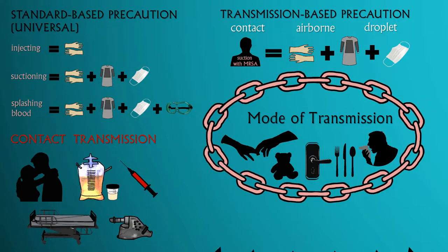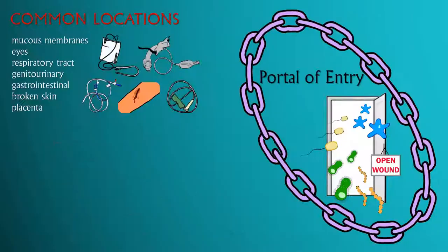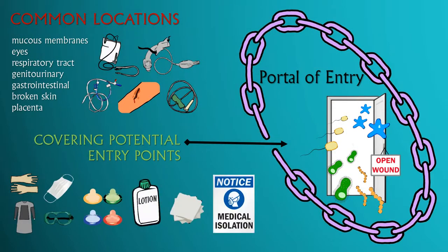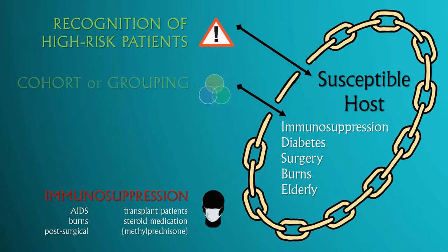The next link is mode of transmission — this is how the pathogen comes in contact with the host. The next link is portal of entry, which provides the access or doorway into the host. The final link that completes the chain of infection is a susceptible host.